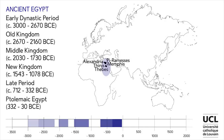Domain 3: Ancient Egypt. The important historical periods include the early dynastic period, the old kingdom, the middle kingdom, the new kingdom, the late period and the Ptolemaic period. The important sites include Thinis, Memphis, Thebes, Pi-Ramesses and Alexandria.